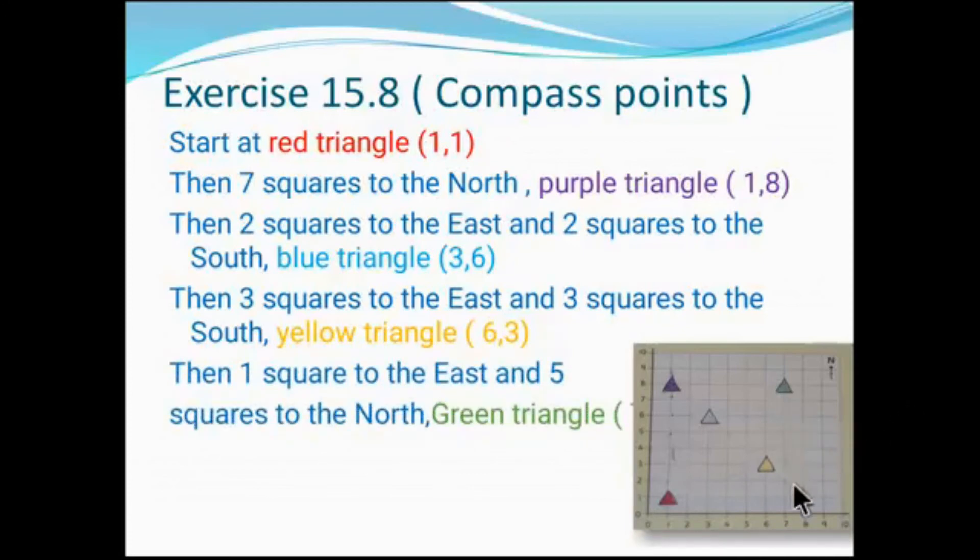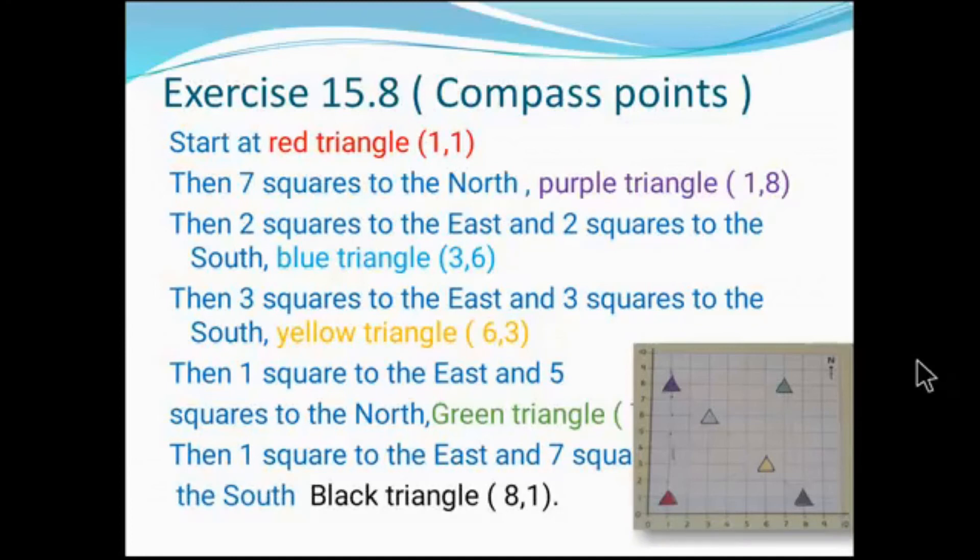And then one square to the east and five squares to the north we can get the green one, and the coordinates is (7,8). And the last one - one square to the east and seven squares to the south you can get this black triangle, which coordinates is (8,1). Yes, it's (8,1), you got it.